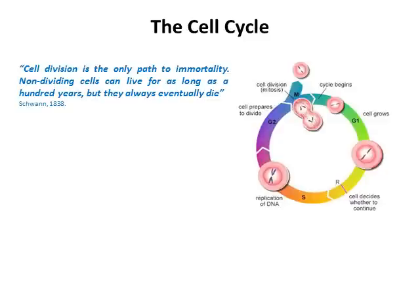Let's start with a quote from Schwann, who discovered Schwann cells. From the 19th century, Schwann said that cell division is the only path to immortality. Non-dividing cells can live for as long as 100 years but will always eventually die. He's probably referring to neurons and cardiac cells, which are in a constant state of stasis — not undergoing division. That's why, if you suffer severe spinal injury, those cells are incapable of regenerating because they simply never grow and divide. All living things are mortal, and Schwann's point is that the only way to achieve true immortality is to continually divide and produce new cells.